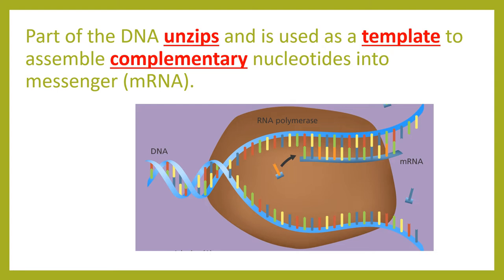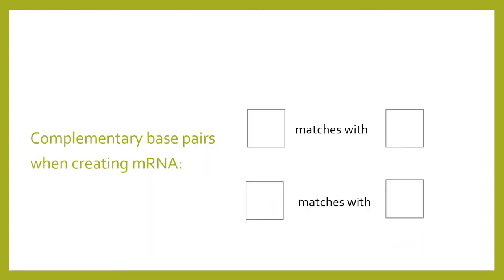During transcription, part of the DNA unzips and is used as a template to assemble complementary nucleotides into messenger RNA. We are making our messenger RNA from our DNA during this step. Our DNA unzips and unwinds and serves as a template for our messenger RNA. This is how we know what goes into the messenger RNA — we get it directly from the DNA.